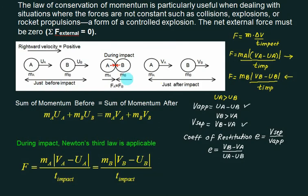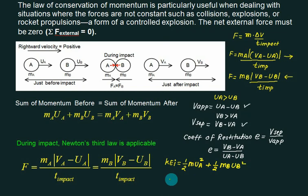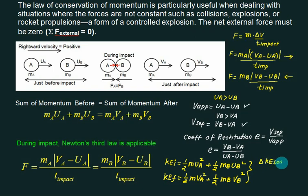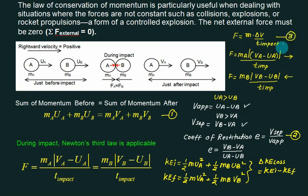Sometimes you are asked to find the change in kinetic energy. Kinetic energy is defined as ½mv². Initial kinetic energy is ½·Ma·Ua² + ½·Mb·Ub². Final kinetic energy is ½·Ma·Va² + ½·Mb·Vb². Loss in kinetic energy equals initial minus final — initial is always higher. So we have four equations: conservation of momentum, coefficient of restitution, impact force, and kinetic energy change.